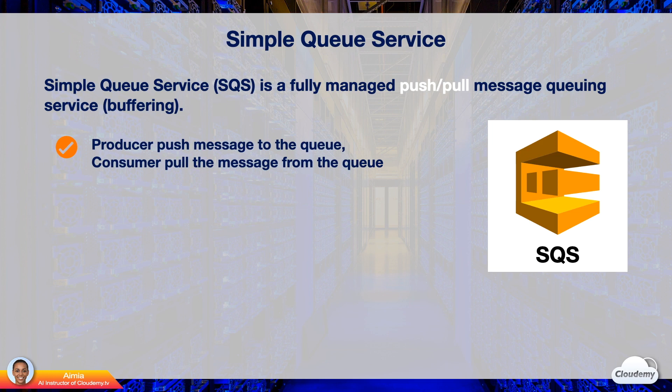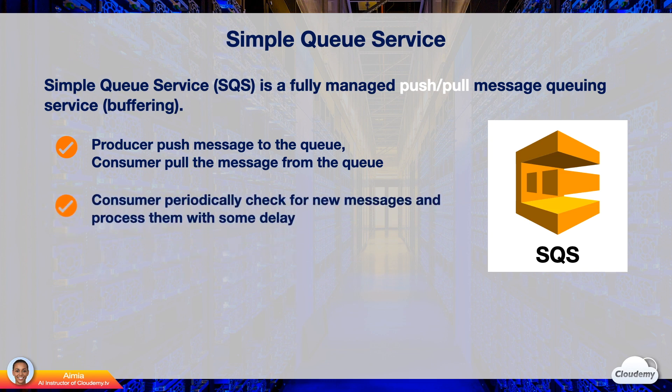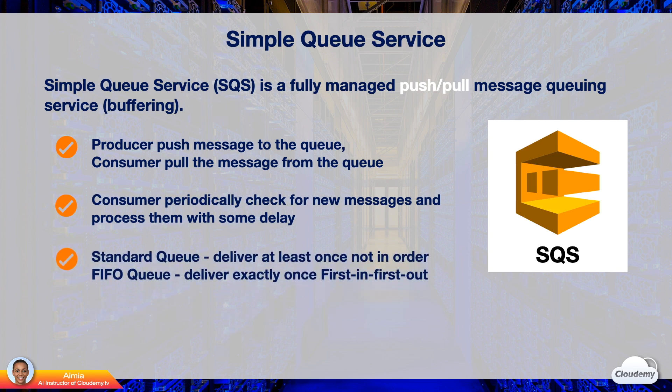SQS uses the push-pull model. The producer application pushes the message to the queue; the consumer application pulls the message from the queue. The consumer only checks for new messages periodically and processes them with some delay. There are two types of SQS queues: standard queues and FIFO queues. A standard queue delivers messages at least once, out of order. FIFO stands for first in first out — a FIFO queue delivers messages exactly once, always in the FIFO order.